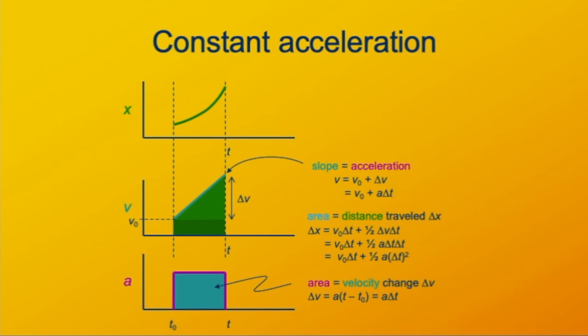This gives a parabola, because the formula, recall, is a quadratic in t. The final position is equal to the initial position x₀ plus the distance traveled Δx.